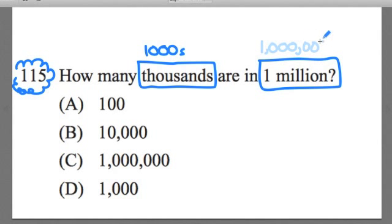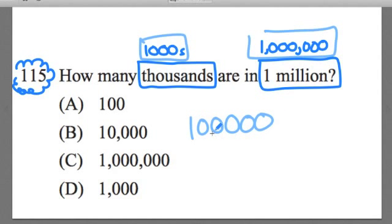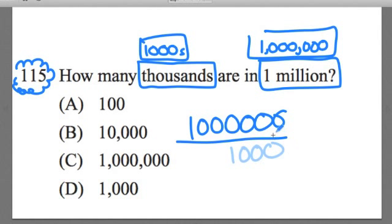I write out the numerical values for a million and a thousand so I can just visually see it a little bit better. We're trying to find out how many of this is in this. All we need to do is do division. So I'm going to do a million divided by a thousand. How many thousands go into that million?